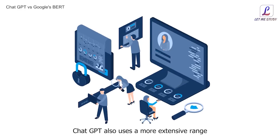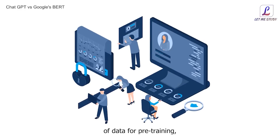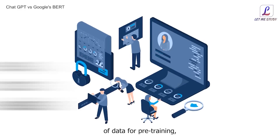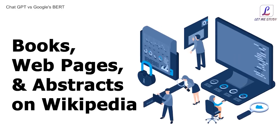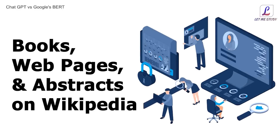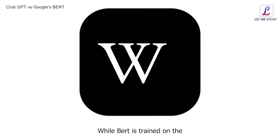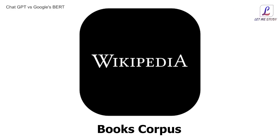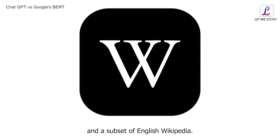ChatGPT also uses a more extensive range of data for pre-training, including books, webpages, and abstracts on Wikipedia, while BERT is trained on the book corpus and a subset of English Wikipedia.